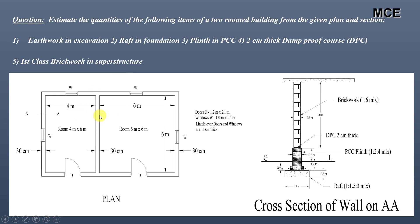You can see the plan of the store room building. For this building the walls are of uniform thickness, that is 30 centimeters. The sizes of doors and windows are given in the plan, and we also have lintels over doors and windows which are 15 centimeters thick. You can also see the cross section of the wall on section AA for this building.